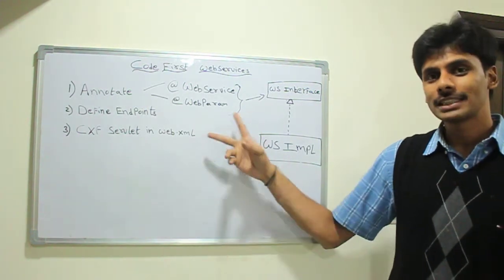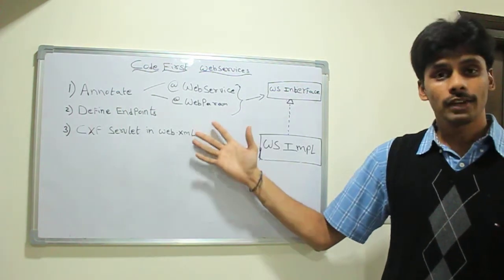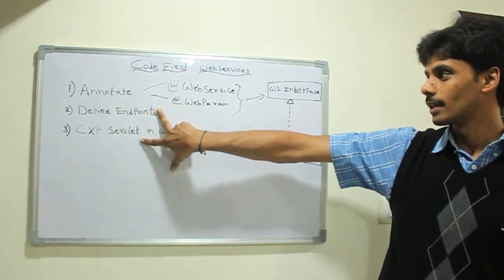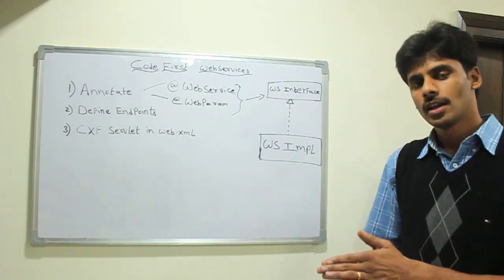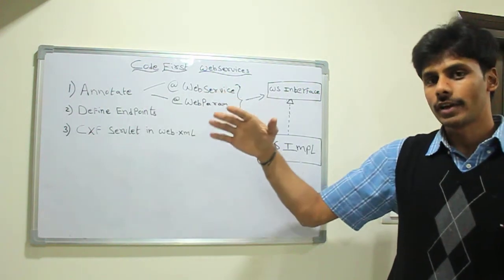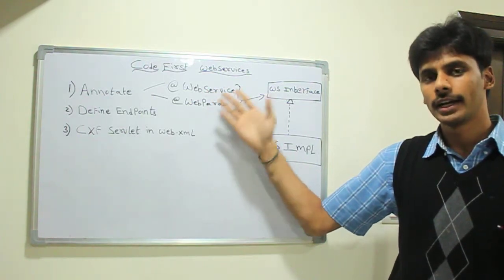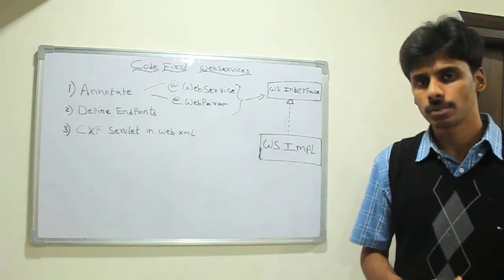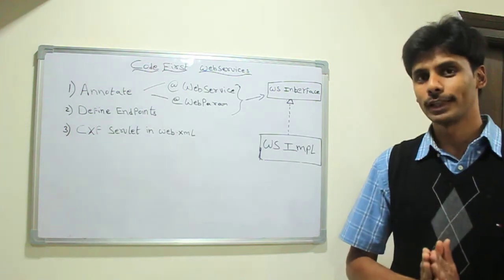If you have noticed, the only difference between a code-first web service and a WSDL-first web service is step one. The remaining two steps remain the same. In step one of WSDL-first, you write a WSDL, generate the stubs, and then implement one of those stubs. But here, we go the other way around — we annotate our web services classes, and CXF at runtime will generate the WSDL and display it to the end user on the browser so they can download it, generate the stubs, and do all that.